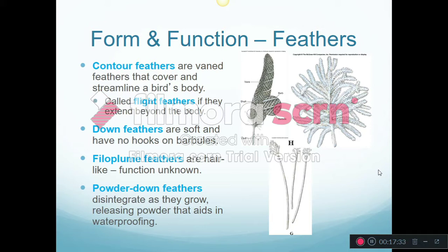Down feathers are very soft and have no hooks on the barbules, so they don't form vanes — they're just fuzzy little feathers mainly for insulation. The filoplume feathers are hair-like; sometimes called pin feathers. We don't know exactly what these are for. Then we have powder down feathers, which kind of disintegrate as they grow, releasing agents that help make the feathers waterproof. Being waterproof has its advantages because you don't want water to get underneath those feathers and chill the core of your body.